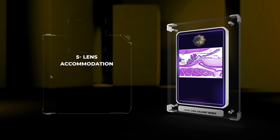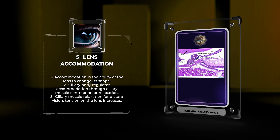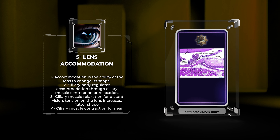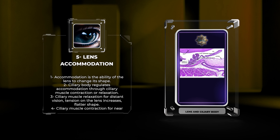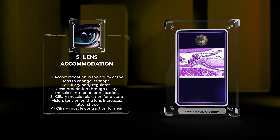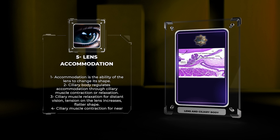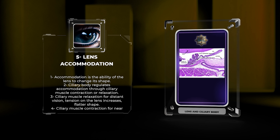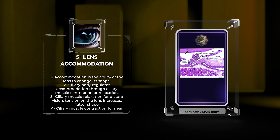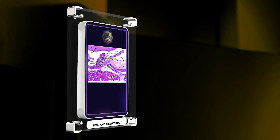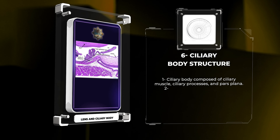The lens has a unique structure that contributes to its transparency and refractive properties. It is composed of specialized cells called lens epithelial cells, located towards the anterior portion, and elongated lens fibers comprising the bulk of the lens volume. The lens fibers are arranged concentrically, forming layers known as lens lamella. These fibers lack organelles, including nuclei, to minimize light scattering and ensure transparency. Additionally, lens fibers are connected by gap junctions called nexuses, allowing for metabolic and ionic coupling between cells.